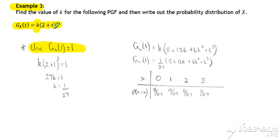If we substitute t is 1 into our formula and set it equal to 1, that enables us to work out k. This result is an important one. You'll use it many times with probability generating functions.